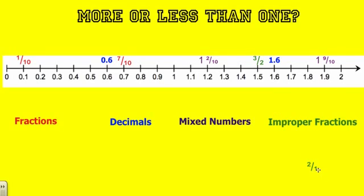And again here, another improper fraction, think of it as a division problem: 2 divided by 1. 2 divided by 1 is 2, which is also greater than one. So you'll notice mixed numbers and improper fractions are going to be greater than one, and fractions are less than one, and decimals can be less than one or greater than one.